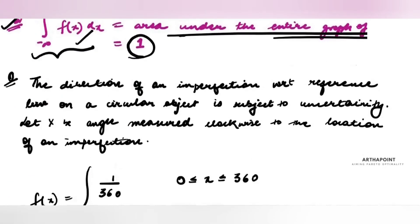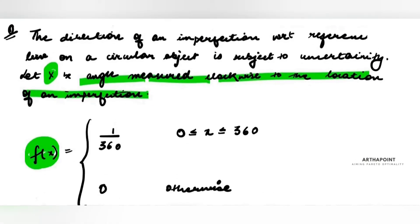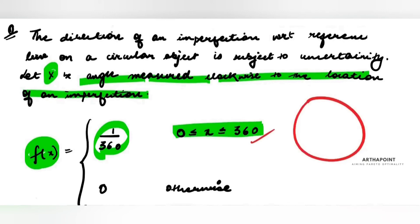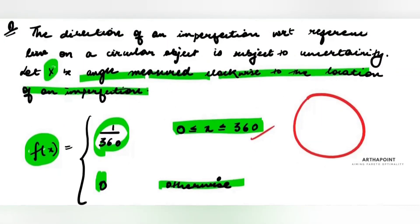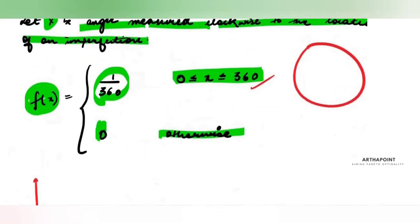Let's take a question. The direction of imperfection with respect to a reference line on a circular object is subject to uncertainty. Let X be the angle measured clockwise to the location of imperfection. The probability density function of X is given as 1/360 when X is between 0 and 360 degrees — the complete angle — and 0 otherwise. We are asked to verify the PDF properties. Clearly f(x) = 1/360 is greater than or equal to zero, so the first property is satisfied.